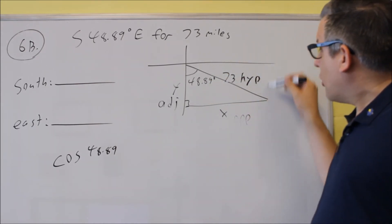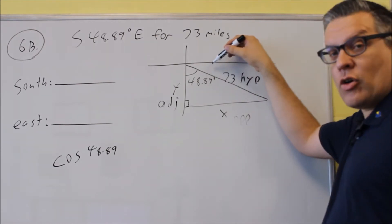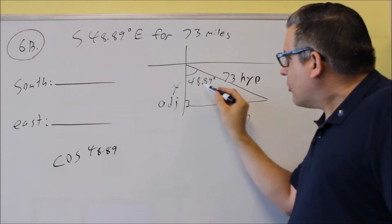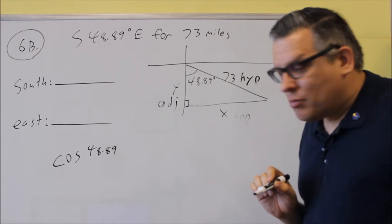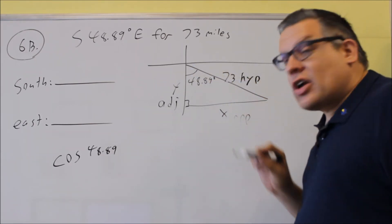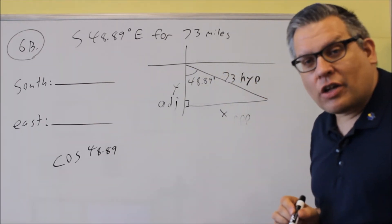Unless we try to draw the triangle up this way, then we want to know that angle up there. But the way we drew it here, 48.89 is measured from the south, and it's already inside our triangle, so we don't have to subtract anything on this one.